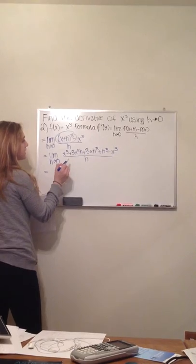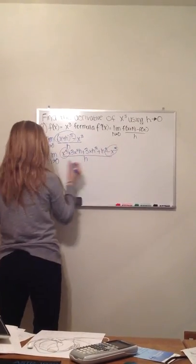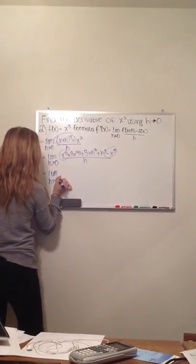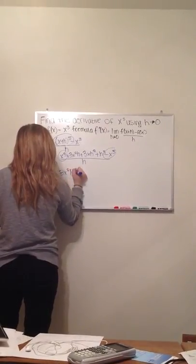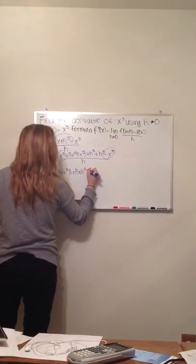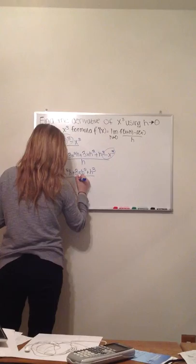Everything that doesn't have an h should cancel. So this x cubed and this x cubed will cancel, which would equal the limit as h approaches 0 to 3x squared h plus 3x h squared plus h cubed all over h.